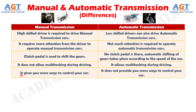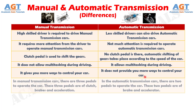Number 13. Manual transmission gives you more ways to control your car, whereas automatic transmission does not provide you more ways to control your car. Number 14. In manual transmission cars, there are three pedals to operate the car. These three pedals are of clutch, brakes, and acceleration.